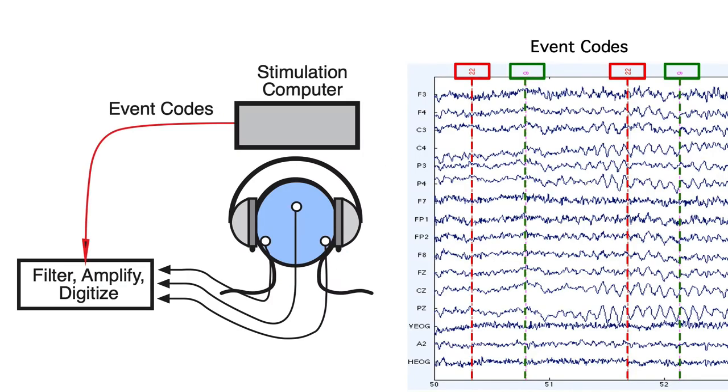So most labs use two computers, one that presents the stimuli and records the responses, and another that records the EEG. The stimuli are usually auditory or visual, but some studies use somatosensory, olfactory, or even gustatory stimuli.